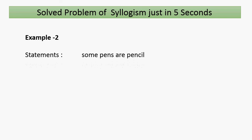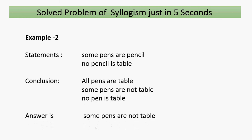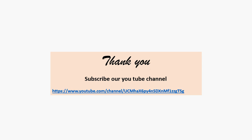Another example: First statement is 'Some pens are pencil.' Second statement is 'No pens is table.' The three conclusions are: first, 'All pens are table'; second, 'Some pens are not table'; third, 'No pen is table.' The trick here is that the first word is 'some' and the second statement's first word is 'no', so the conclusion is 'some not'. The second conclusion matches: 'Some pens are not table.' That is our answer.